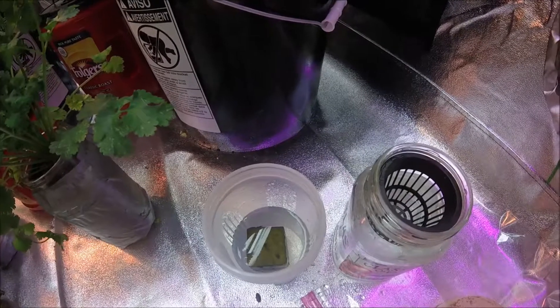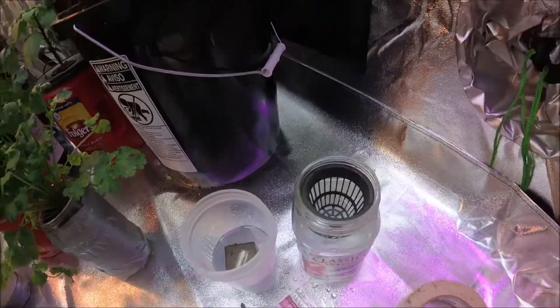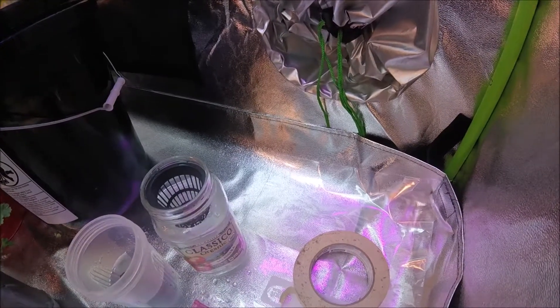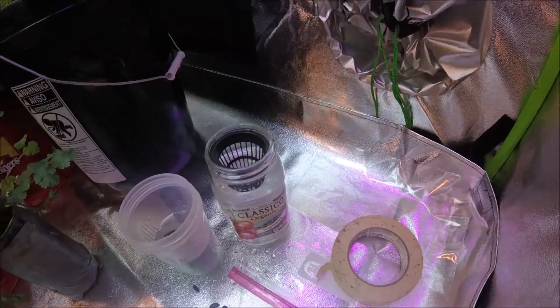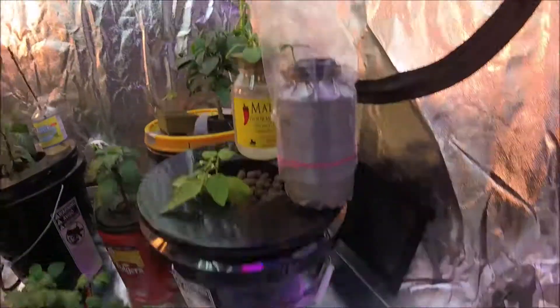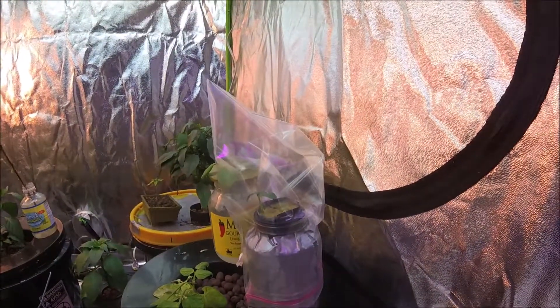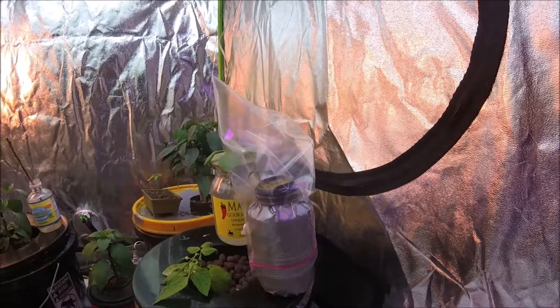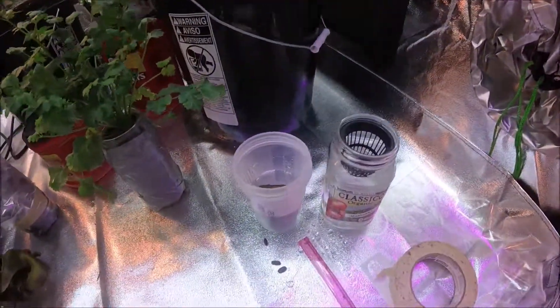So that the rockwool cube can stay wet as the beans try to sprout. Then I have a ziploc bag and some tape. I'm just going to try to make a little humidity dome, similar to what I've done here for the pickling cucumbers. That's about ready to come off because it's sprouted nicely.